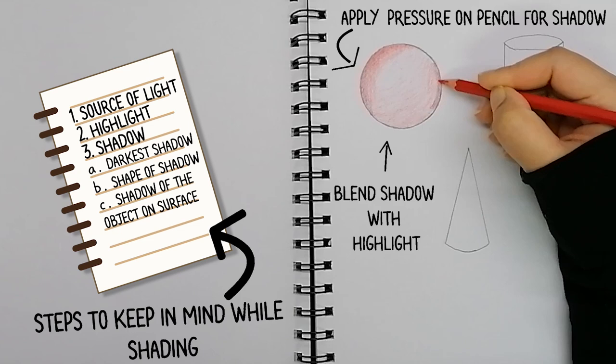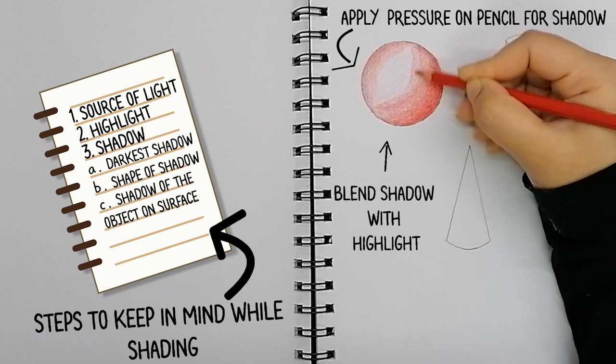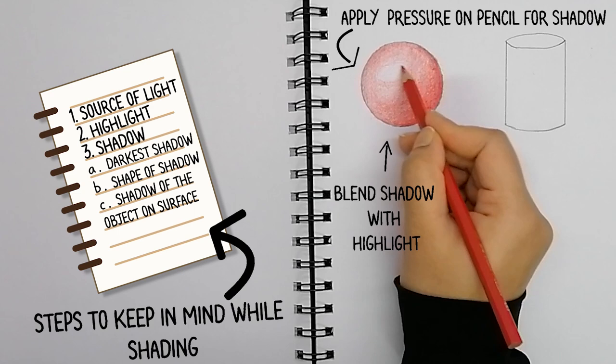I will start developing the shadow by applying pressure on the pencil and then blend it with the highlight gradually. Just practice with your usual stationary. Keep in mind that the paper I'm using has a rough texture that suits the pencils, otherwise it's fine. The pencils I'm using are basic Faber-Castell pencils.